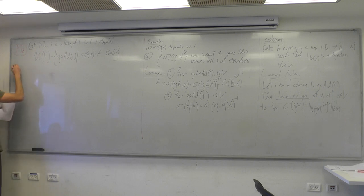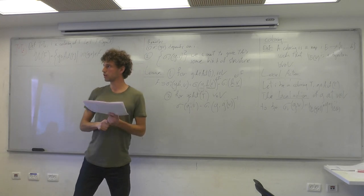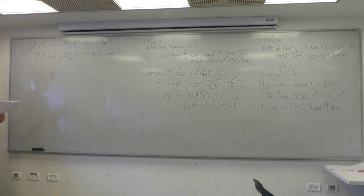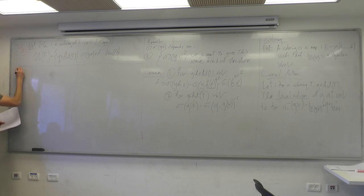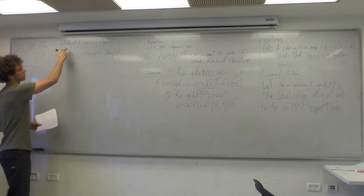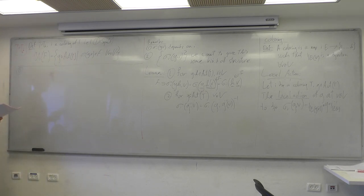Before making claims about these universal groups, let me give two examples — the two simplest examples you can think of. The tree T and coloring i are fixed, so the only thing I can choose is F. What is the simplest example?